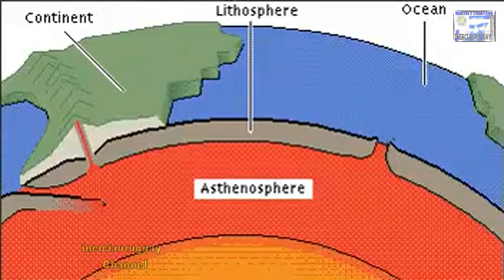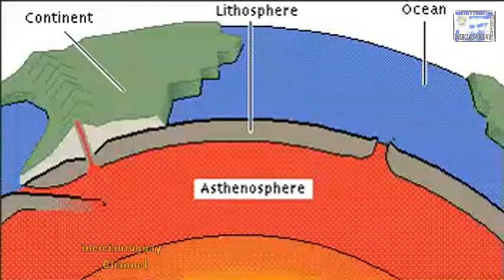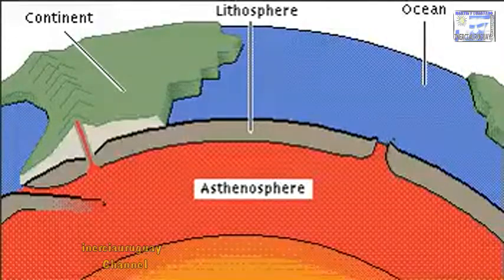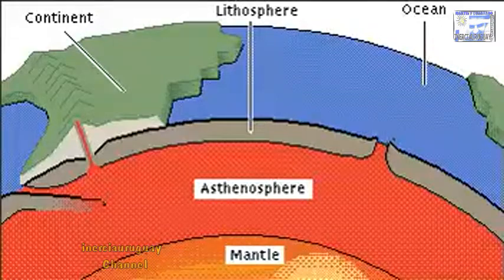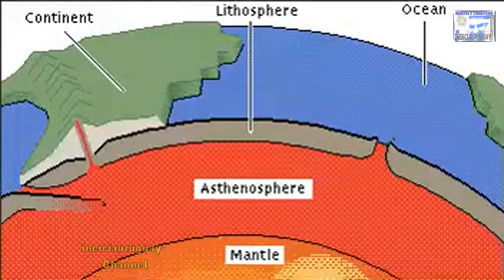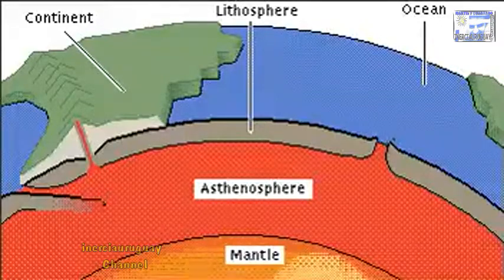Beneath the lithosphere is the asthenosphere, a plastic layer of material that flows very slowly as it is heated from the mantle below.